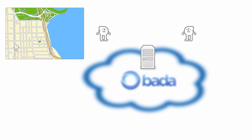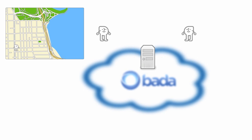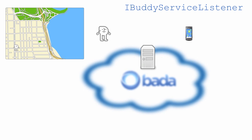Users of the Bada server can be connected as buddies, the social relationship which we manage in BuddyFix. Sending and responding to buddy requests is handled by the BuddyService class, and any buddy-related requests are handled asynchronously by the iBuddyService listener.